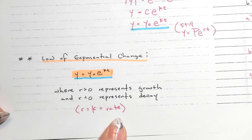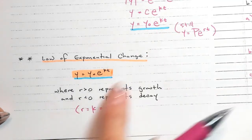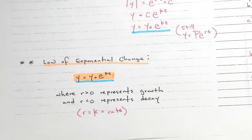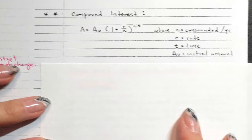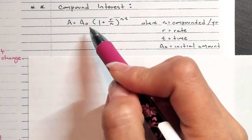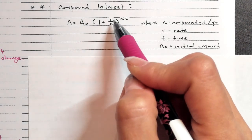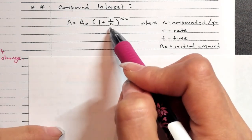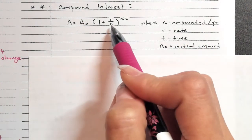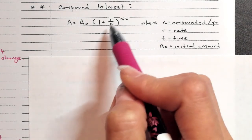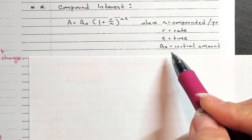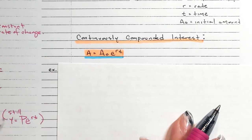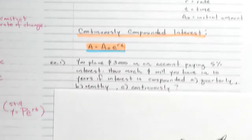For compound interest, you put money into the bank earning at some rate — say 5% — compounded daily, monthly, or quarterly. The standard compound interest formula uses n as the number of times compounded per year, so for daily compounding n = 365, and it's raised to the power of n·t. Compounding continuously uses the PERT formula instead.